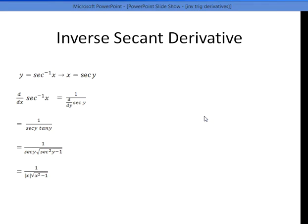Again, how about secant? This is slightly more complicated, but it's not that much more complicated. So derivative of secant inverse x, write it as 1 over d over dy secant y. And what's the derivative of secant y? Secant y tan y.